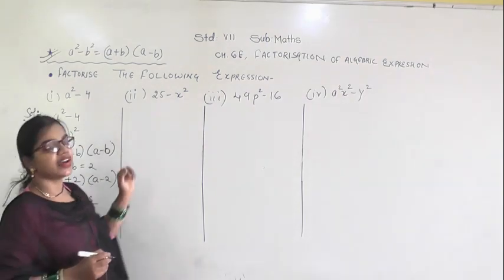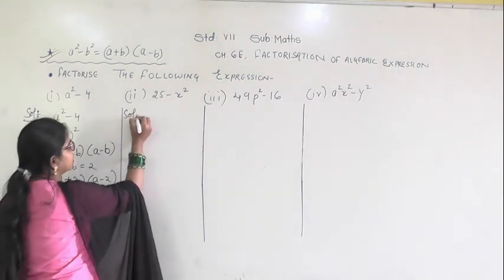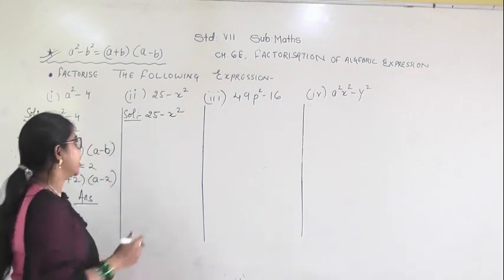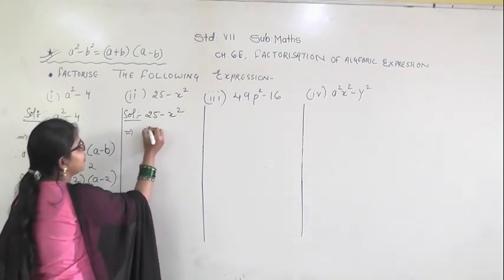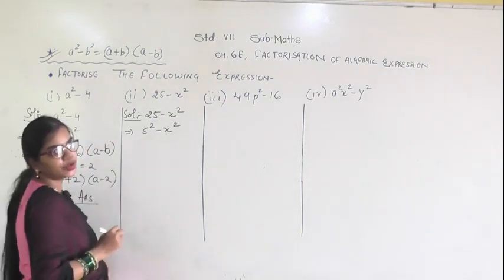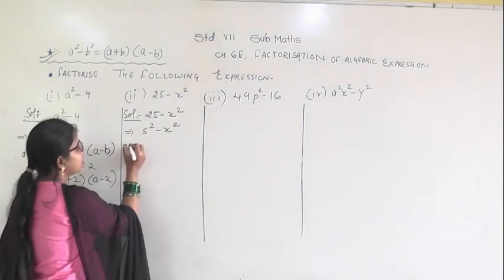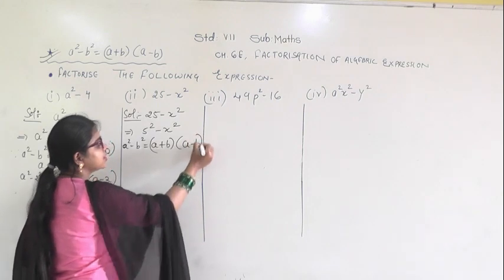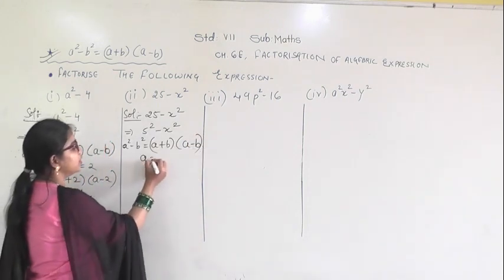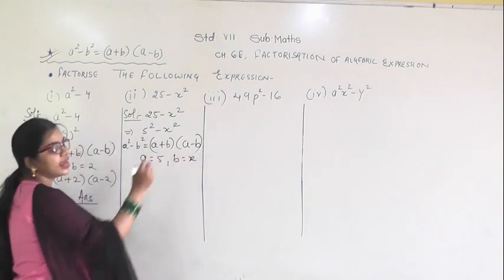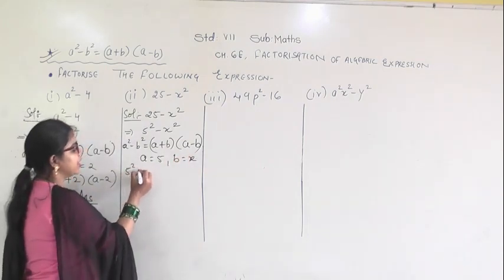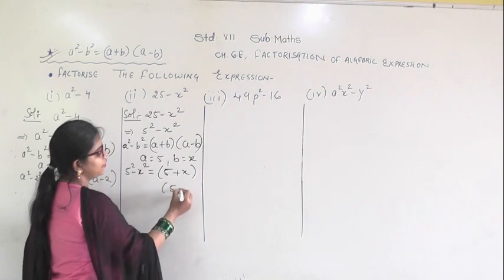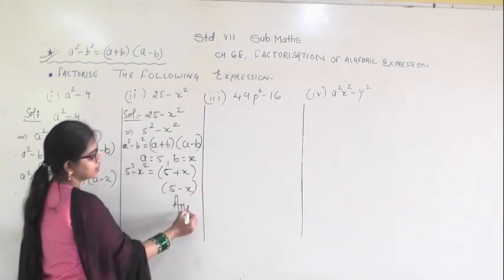The next question is 25 minus x squared. To bring it into the form of a squared minus b squared, I can write 25 as 5 squared. So from here, a squared minus b squared equals (a plus b)(a minus b), where a equals 5 and b equals x. Substituting, 5 squared minus x squared gives (5 plus x)(5 minus x). This is the answer.